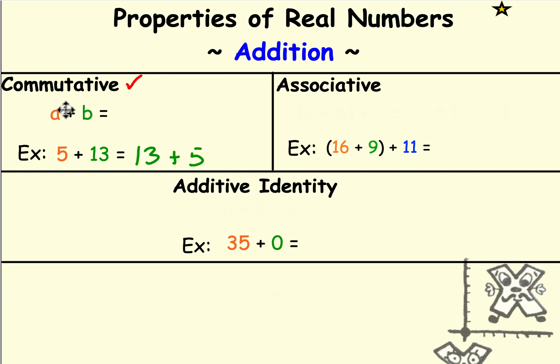The commutative property for addition says if we're adding two numbers together, where a represents the first real number and b represents the second real number, we can add them in any order. It doesn't matter what kinds of numbers they are—it could be fractions, decimals, whole numbers, integers, or a mixture. It could be 5 numbers or 100 numbers—no matter how many numbers, we can add them in whatever order we like.